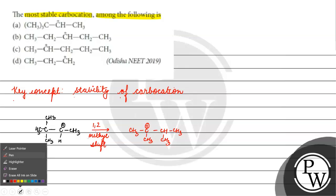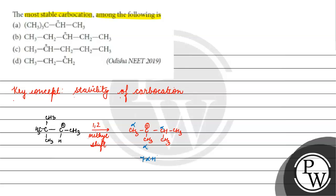Now, we have a tertiary carbocation. If we talk about alpha H, what is it? 7 alpha H.